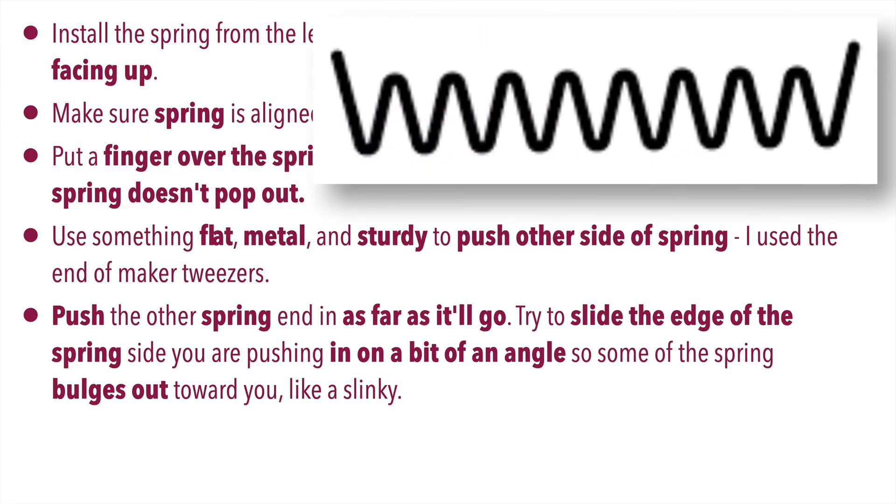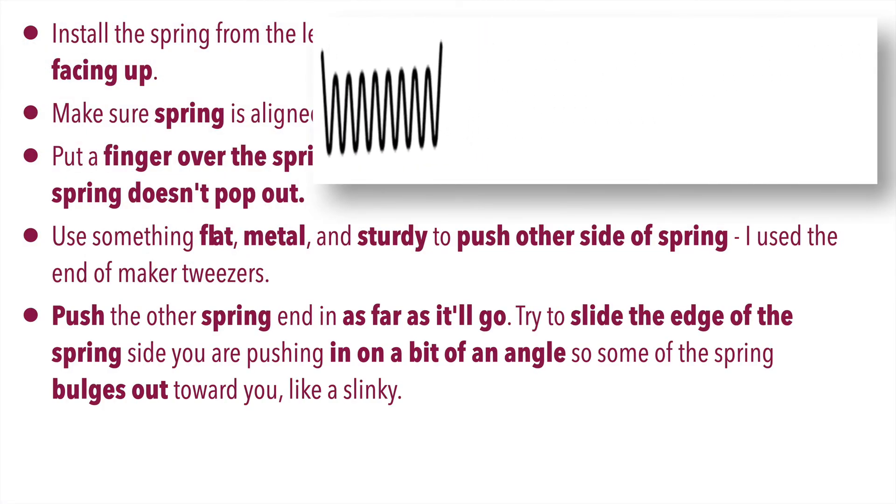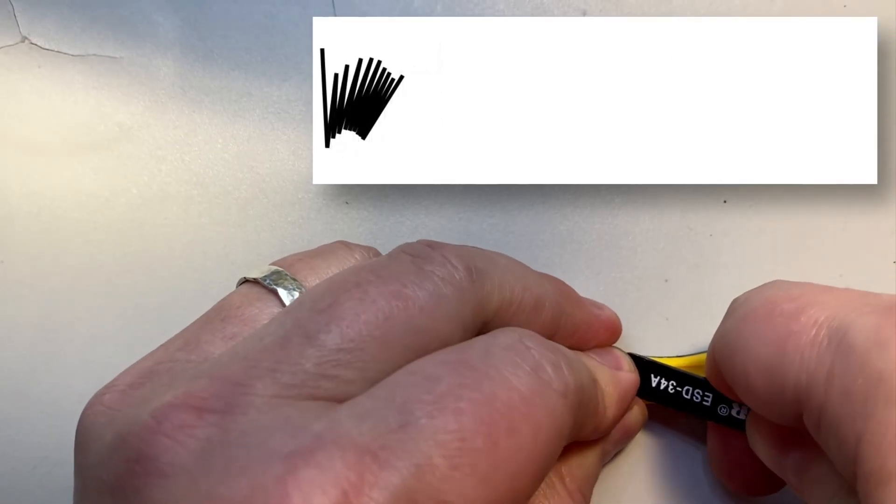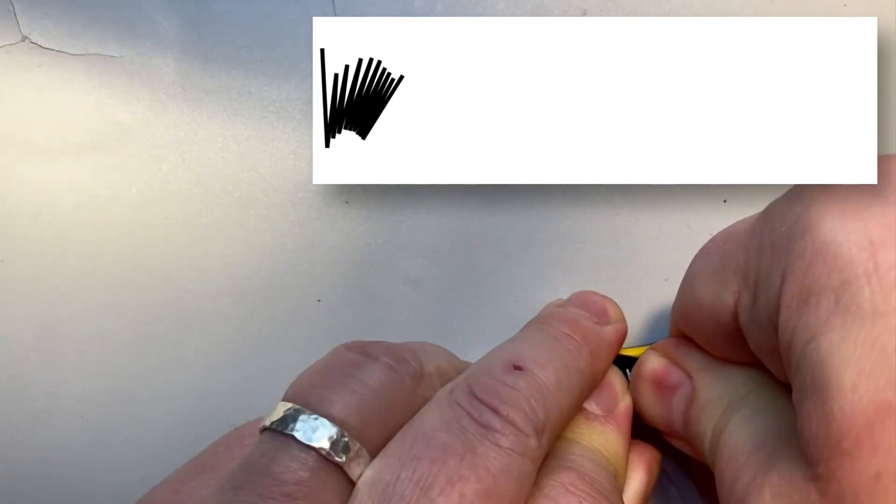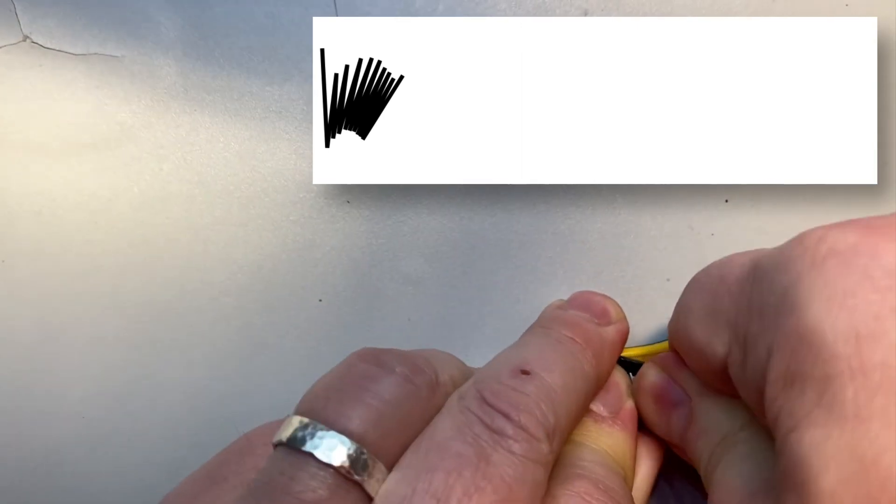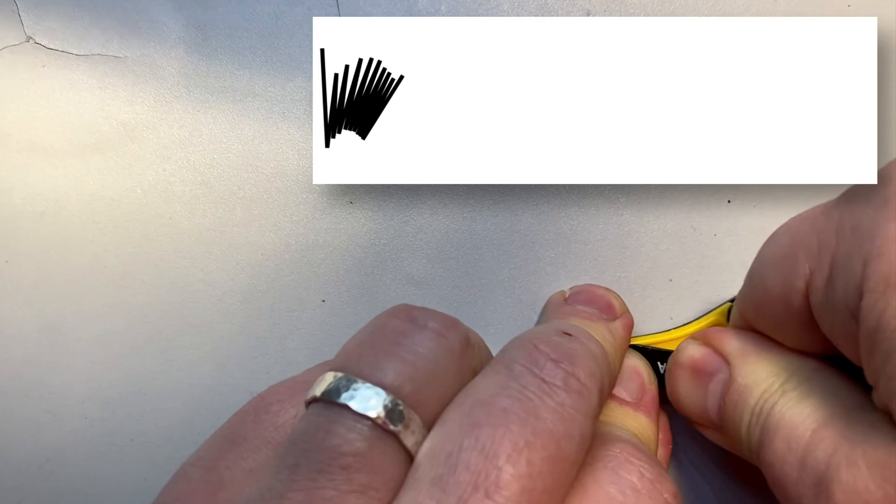Then push the other end of the spring in as far as it'll go. Once you've done that, try to slide the edge of the spring you're pushing in at a bit of an angle. This will cause the spring to bulge out toward you like a slinky, but that should give you enough clearance to push the other end of the spring in.